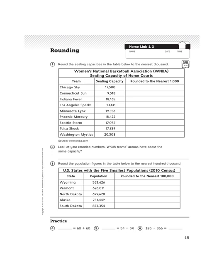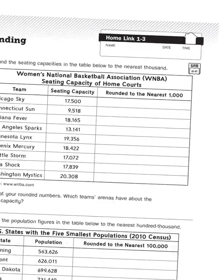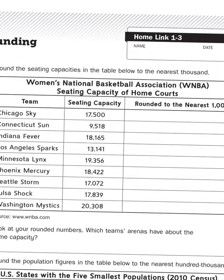You'll notice that problem number one involves a large table showing the seating capacity for the Women's National Basketball Association, the WNBA. These home courts can fit so many people, and what we need to do is round those numbers to make them easy or digestible. The instructions for number one say: round to the nearest thousand.